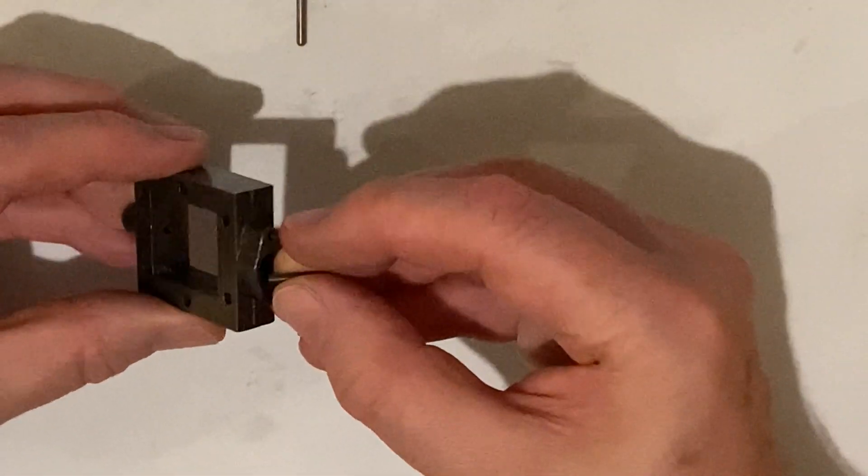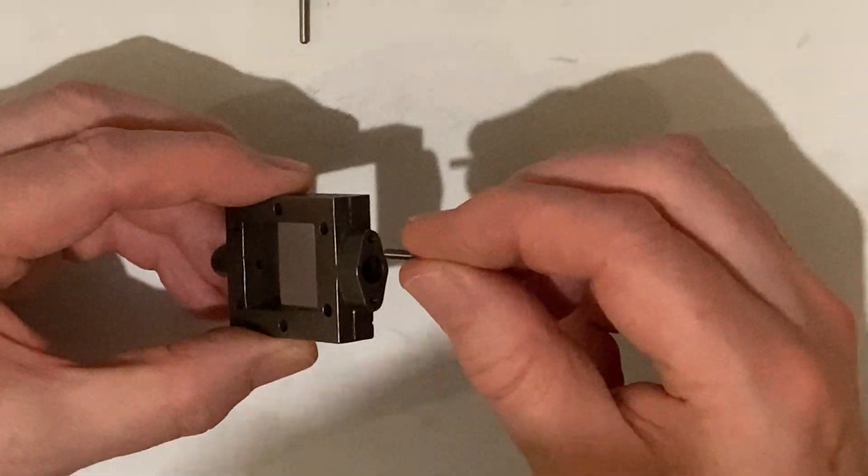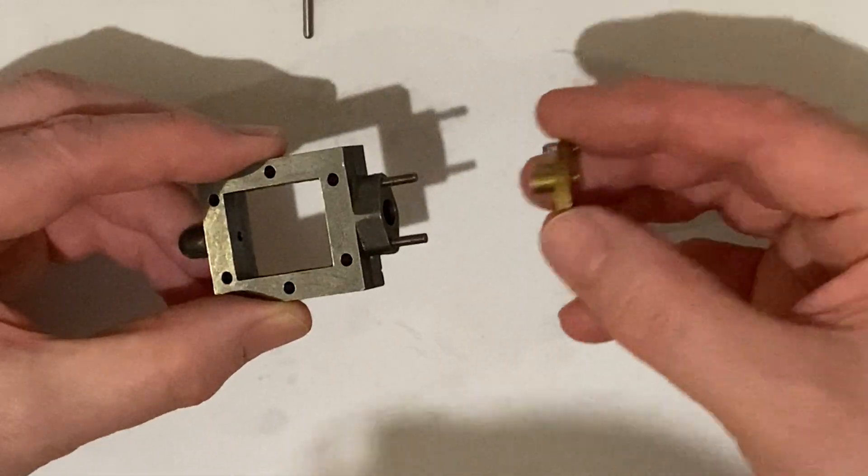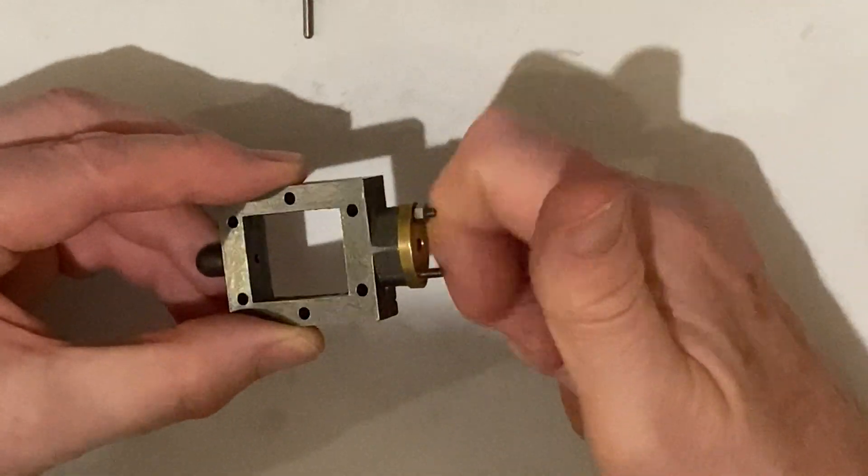First thing we're going to do is to fit the small studs for the gland. The gland goes on like this, closely followed by the two 7BA nuts.